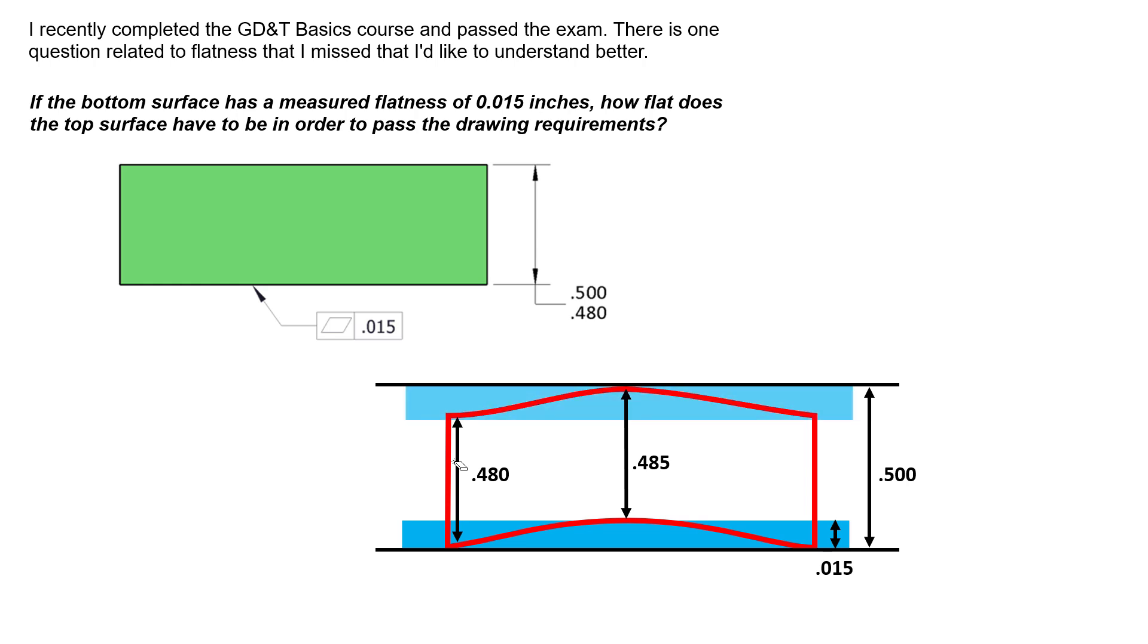The top surface is only required to be flat because of rule number one. In other words, we can actually see that this top surface would have 15 thousandths even if the bottom surface was perfectly flat, due to the size tolerances and rule number one. We can see that the smallest local size we could ever have is 0.480, and the largest local size we could ever have is 0.500.